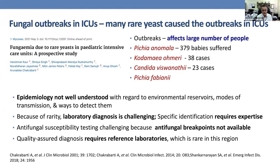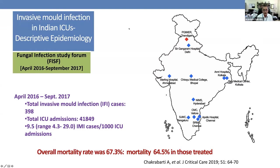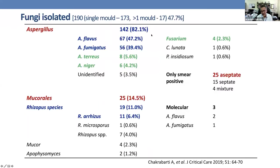For mold infections in ICU, multi-centric studies show high infection rates in India, with very high mortality even among treated patients. We need much earlier diagnosis. Aspergillus remains the most common, but mucormycosis is also very important in India. If we count the non-septate hyphae, mucormycosis possibly accounts for one quarter of mold cases.